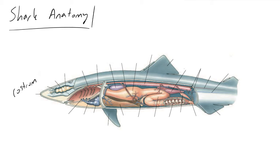Around the rostrum you're going to find these little dots on the shark's nose, and they're called ampullae of Lorenzini. These ampullae function to interpret electromagnetic signals from ion potentials or action potentials that occur in nearby fish. This makes sharks very well suited to detect nearby animals, especially when they're about to attack.